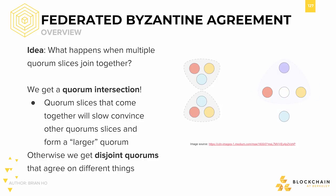In the scenario where these quorum slices don't line up, we get what are known as disjoint quorums — the pitfall of federated consensus. If this happens, then there is no way to guarantee that all actors will come to consensus.